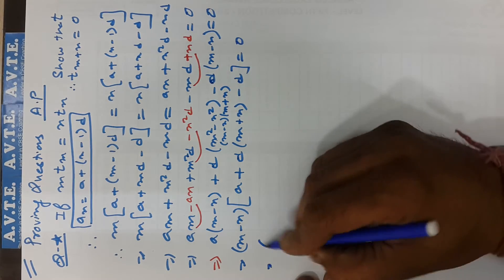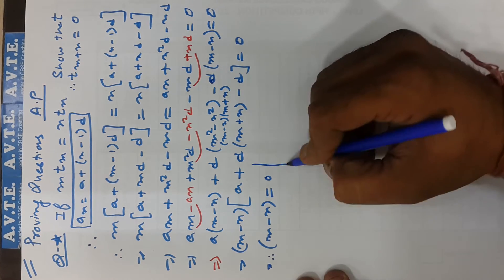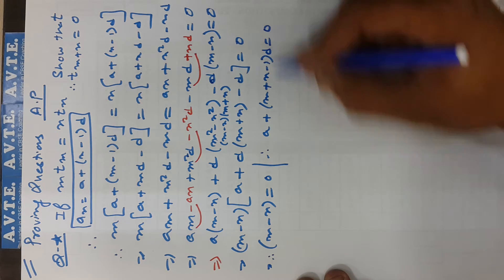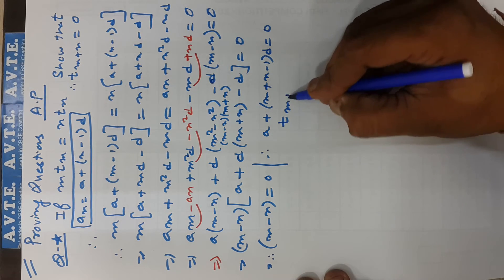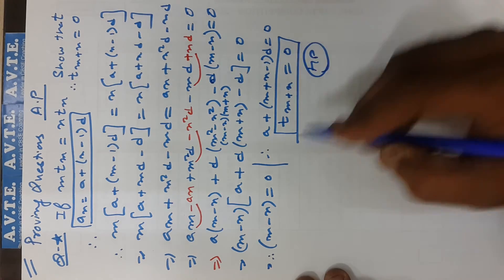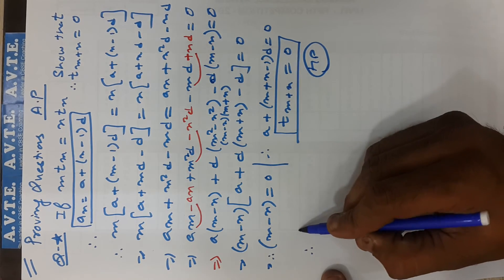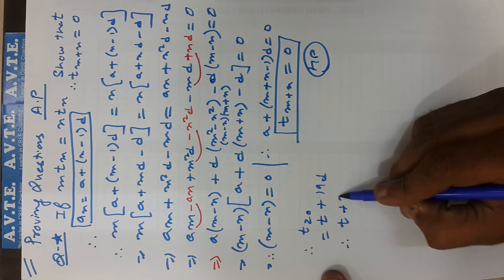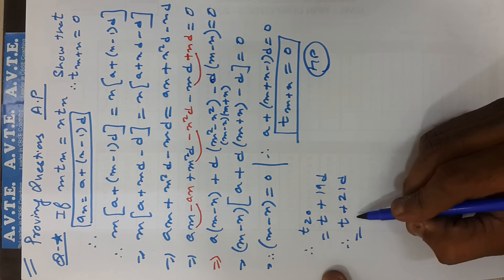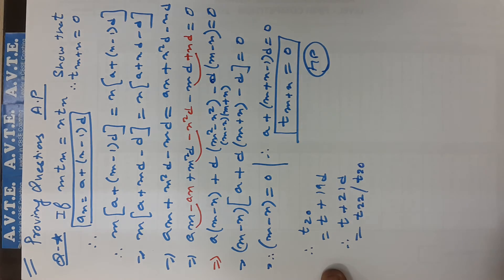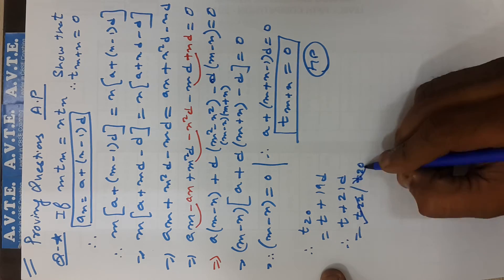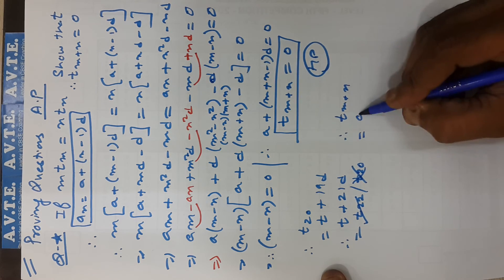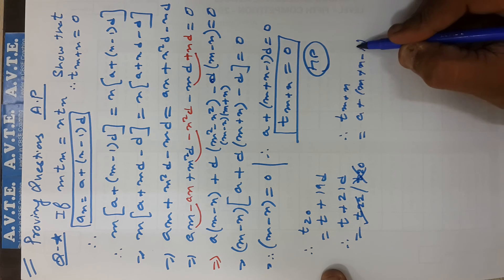Since (m - n) is not equal to 0, the other factor must be 0. This gives us a + (m+n-1)d equals 0, which is exactly the (m+n)-th term equal to 0. Hence proved.